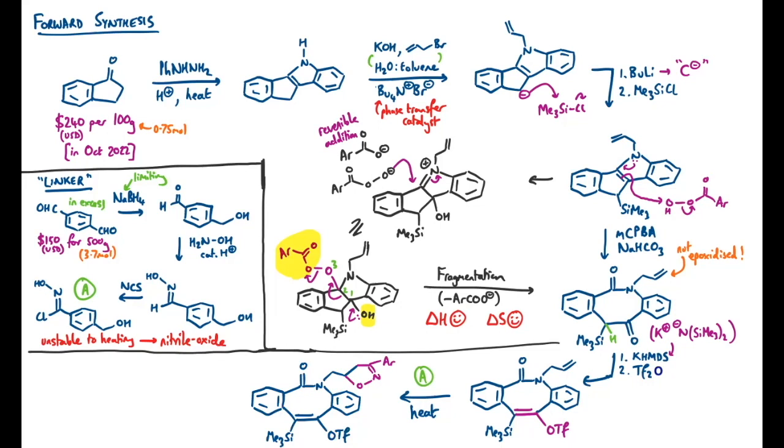And we've got one final step, that's to finally form the strained alkyne. We need something that forcibly attacks the silicon, removes it from the molecule to promote elimination of the really good triflate leaving group. A really good clean source of fluoride that would be good for this reaction would be cesium fluoride.